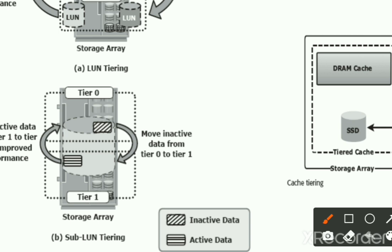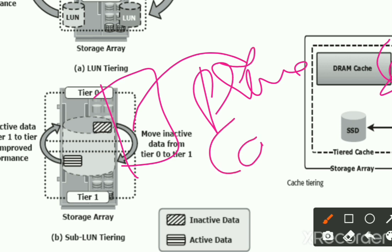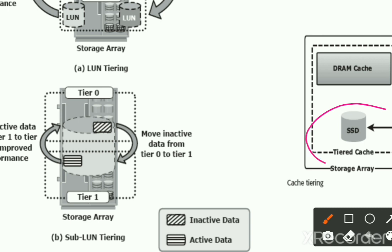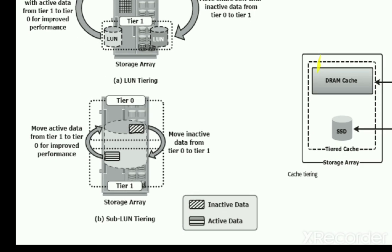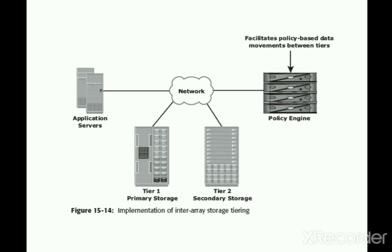The third type is cache tiering. As we know, there is primary memory and secondary memory. Whenever data is requested by the CPU, it is fetched from primary memory — also called cache — and the cache in turn fetches data from secondary memory to make access very fast and increase performance. We place cache, also called dynamic RAM, and similarly in SSDs — solid-state drives — we place cache so that performance is further increased. These are all methods applied for intra-array storage.